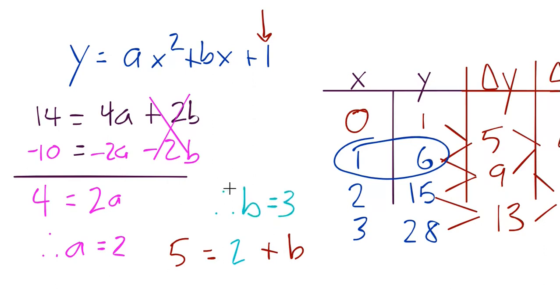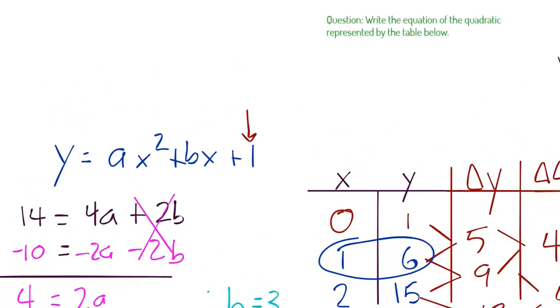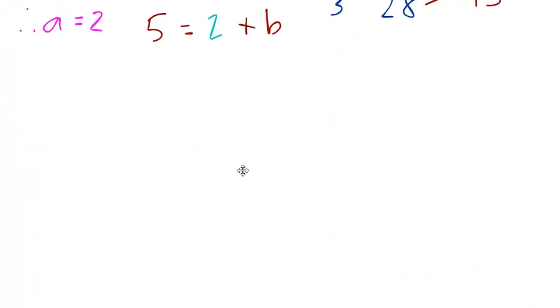So all that work. And these little triple dots just mean in conclusion or therefore. So a is equal to 2, b is equal to 3, and we already found out that c is equal to 1. So we're going to take all those values. Let me move this down here, and we're going to plug them into that standard form of a quadratic.